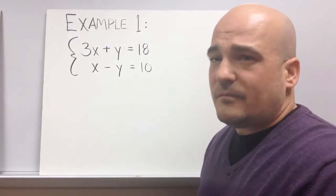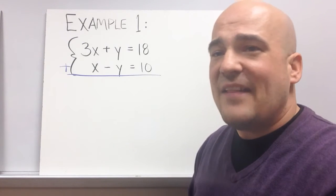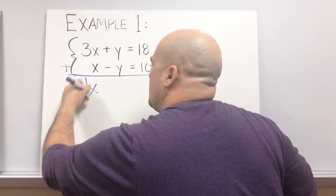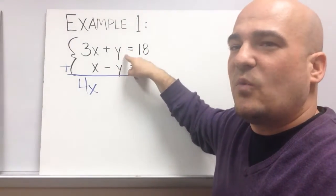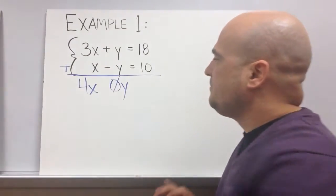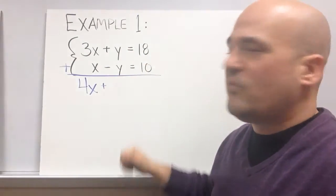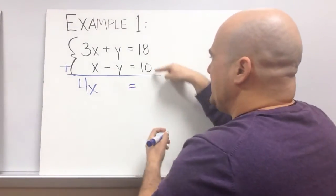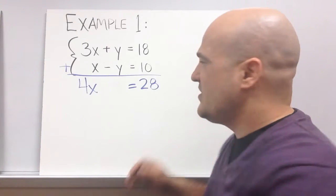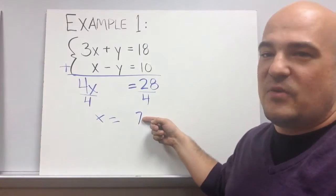I'm just going to add these two equations — add the x's together, add the y's together, and add the constants. So 3x plus 1x equals 4x. And then y plus a negative y, or y minus y, those cancel out and you get 0y — they just disappear. Then I add my constants together, and 18 plus 10 is 28. Now I have one equation with one variable: 4x equals 28. I divide both sides by 4, and 28 divided by 4 is 7, so x equals 7.